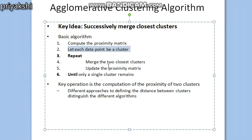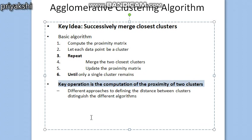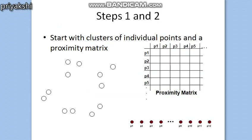you start by considering individual points as clusters and successively merge the two closest clusters until only one cluster remains. At the same time you update the proximity matrix, and this process repeats until a single cluster remains. The key operation in agglomerative hierarchical clustering is the computation of proximity between two clusters, and different approaches for defining this distance distinguish the different algorithms.